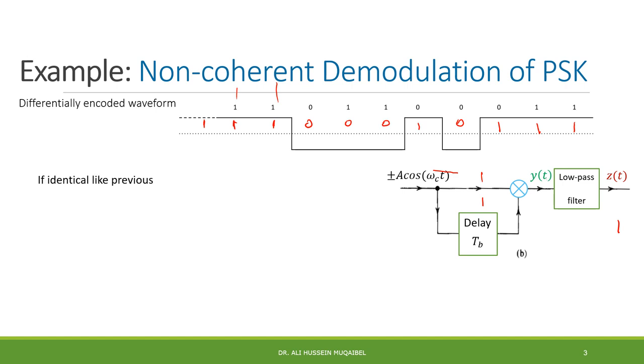Now, if identical like previous, if the bits are identical like previous, then you get a cosine here, a cosine there, their multiplication. Why? The green signal is going to be cosine squared, whether minus, minus, or plus. So, if identical, I get cosine squared. Cosine squared, as you know, we can simplify it into one half, one plus cosine, double the angle.